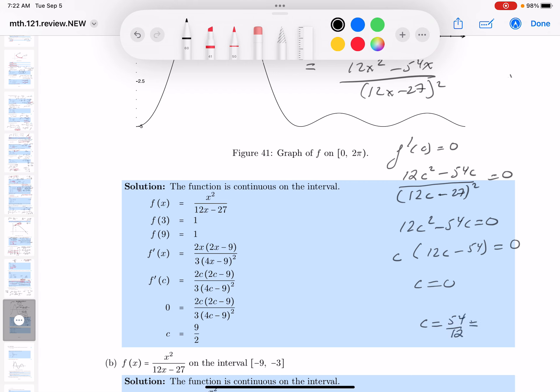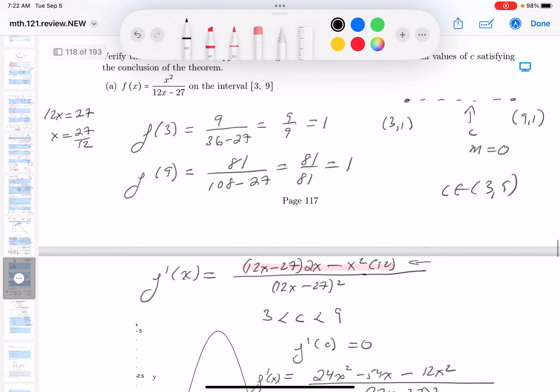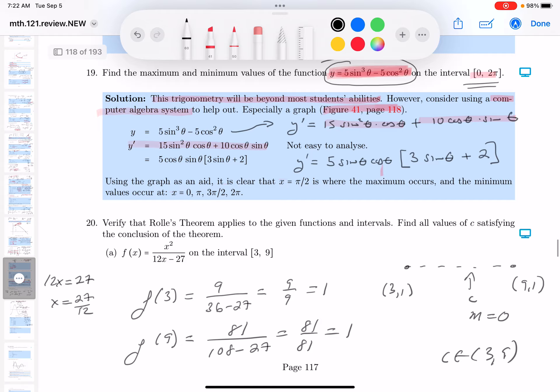The c would equal 54 over 12. I do want to reduce that, by the way. And we're going to reduce that. I'll divide by 2. So this is going to be 27 over 6. And now I'm going to divide by 3. 3 goes into 27 9 times, into 6 2 times. So it's 9 over 2, which is 4.5. Is that in the interval? It's certainly in the interval. So what they asked me to do? Find the c. I found the c.